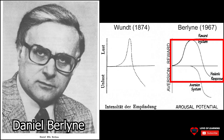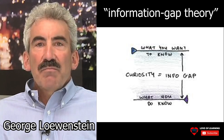Building on Berlyne's insights, in 1994, George Loewenstein of Carnegie Mellon University proposed the information gap theory. He posited that people become curious upon realizing that they lack desired knowledge; this creates an aversive feeling of uncertainty, which compels them to uncover the missing information.